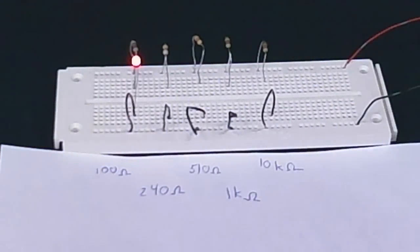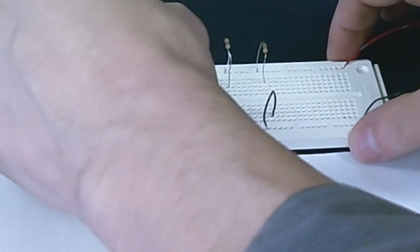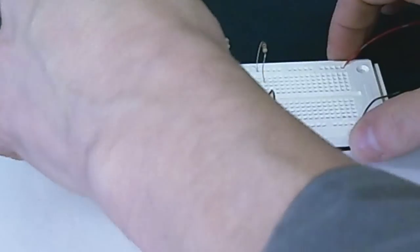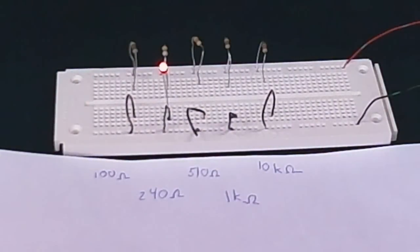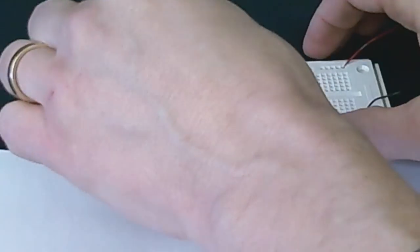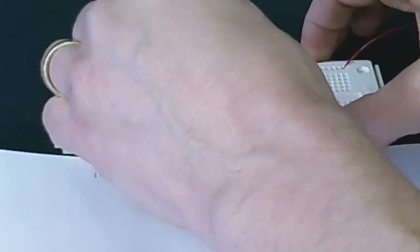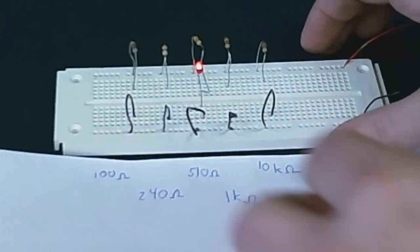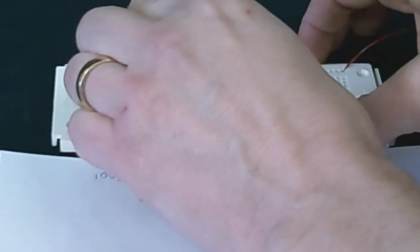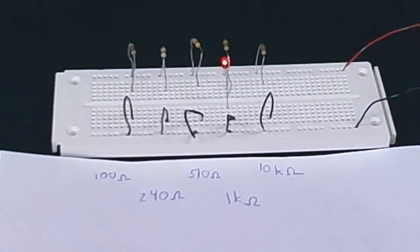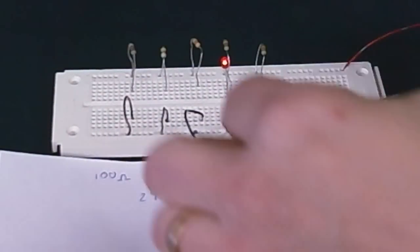That's with a 100 ohm resistor. Here we go with the 240 ohm resistor. Still quite bright. Here's the 510 ohm resistor. Here's the 1 kiloohm resistor. You see it's a little dimmer now.